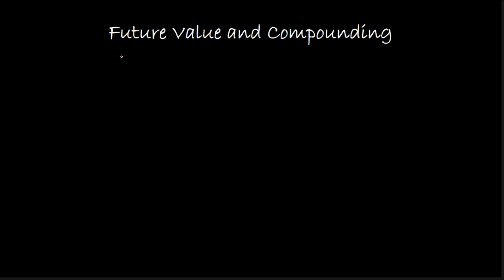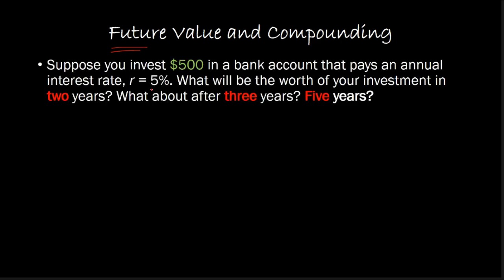In order to do that, I'm going to take you back to discussing the idea of future value — only now we will be discussing this in the context of a multi-period setting. So instead of going out just one year, we'll go out multiple time periods ahead. Let's do that using an example: suppose that you invest $500 in a bank account today that pays an annual interest rate of 5%.